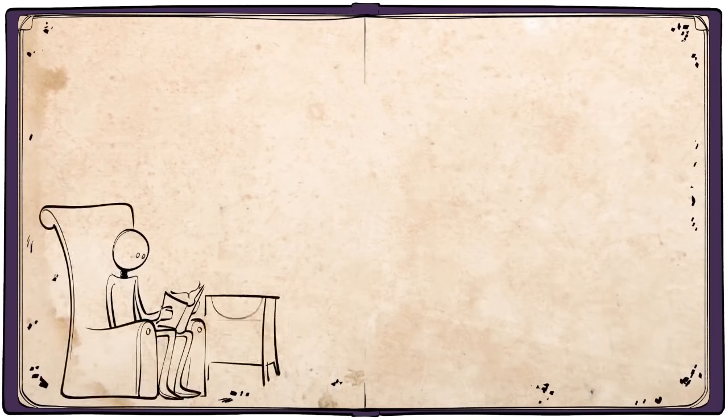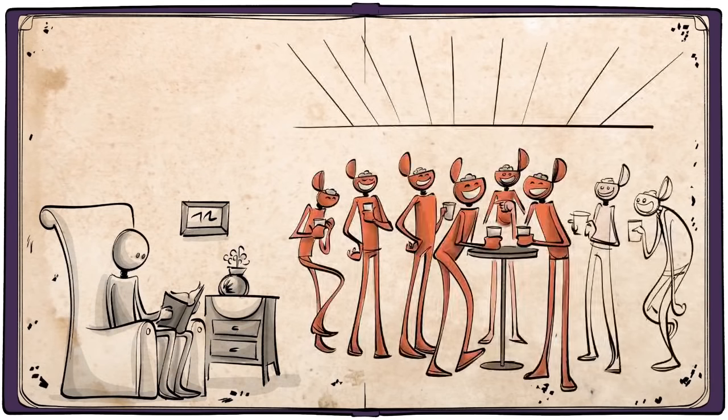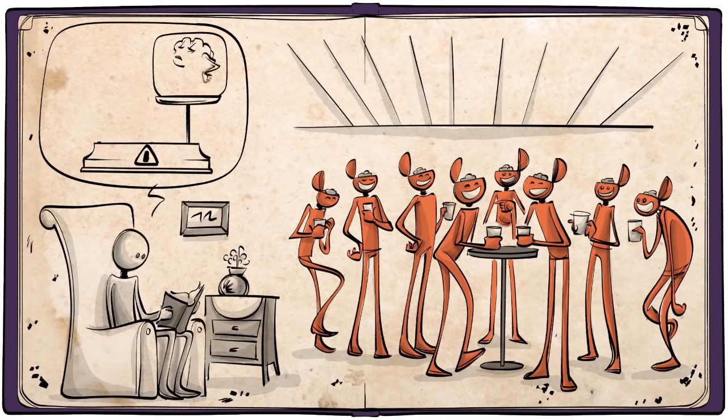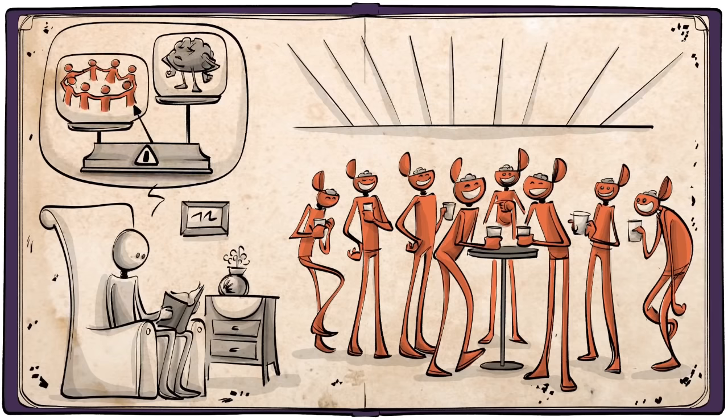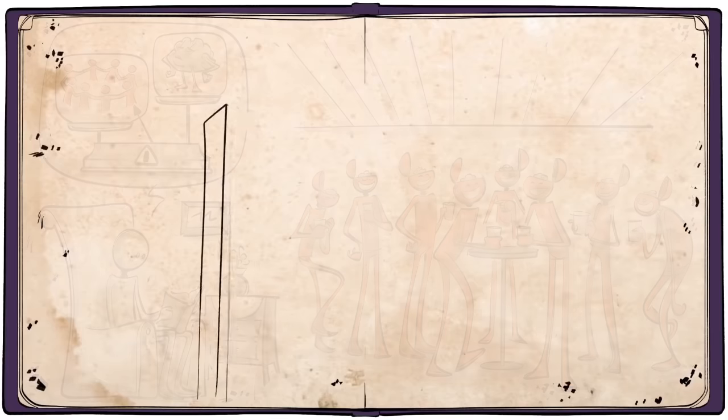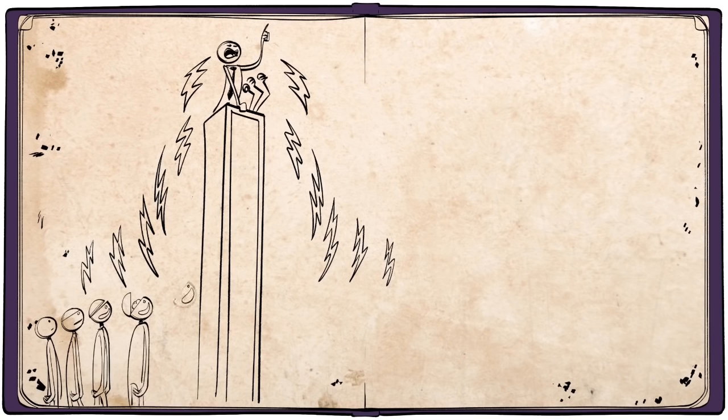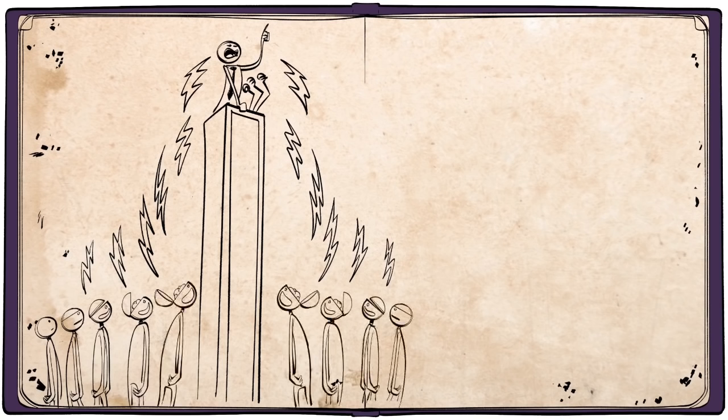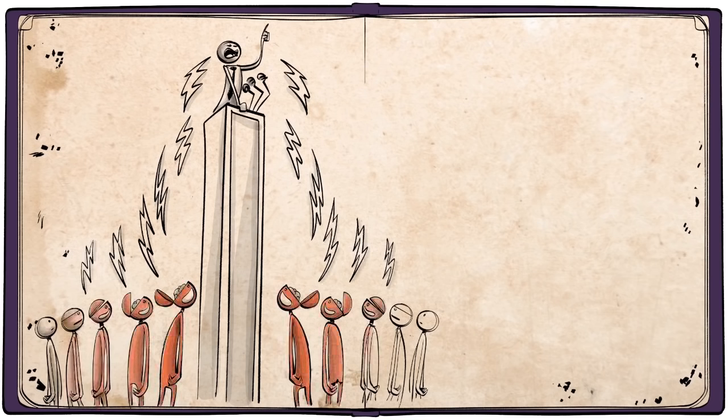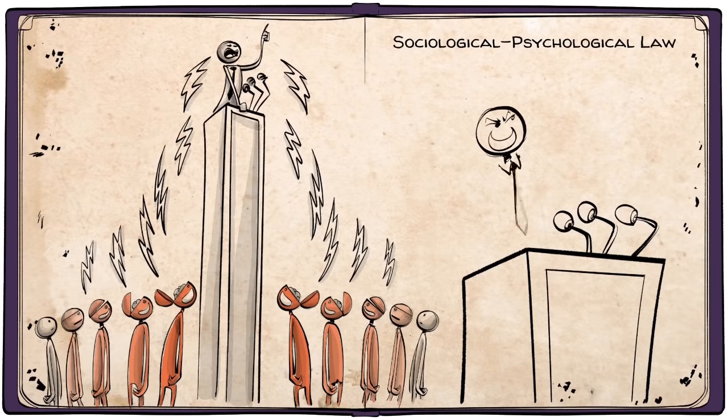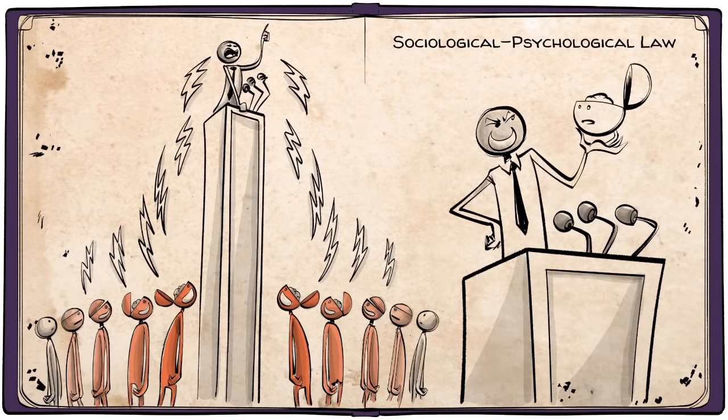People who live in solitude manifest this defect less frequently than individuals in groups, and so it would seem that stupidity is perhaps less a psychological than a sociological problem. It becomes apparent that every strong upsurge of power, be it of a political or religious nature, infects a large part of humankind with stupidity, almost as if this is a sociological psychological law, where the power of the one needs the stupidity of the other.